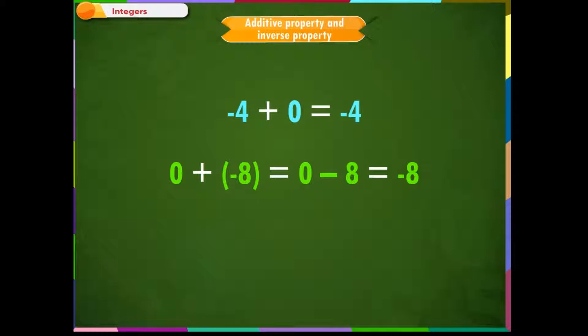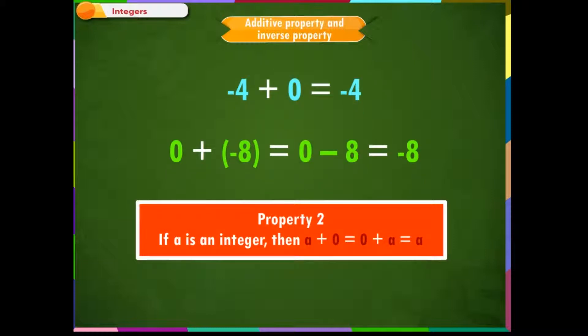In general, we get property 2, which says if A is an integer, then A plus 0 is equal to 0 plus A is equal to A.